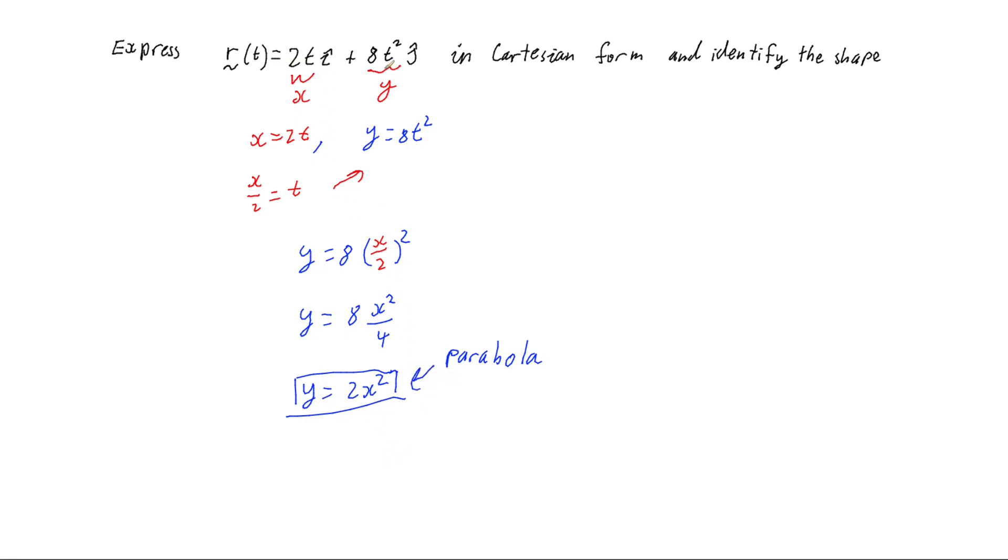So there you have it. If you have a vector equation and you need to convert it into Cartesian form, identify the x and the y components from the vector components, isolate the parameter for one of those equations, substitute into the other, simplify, and you have your answer.